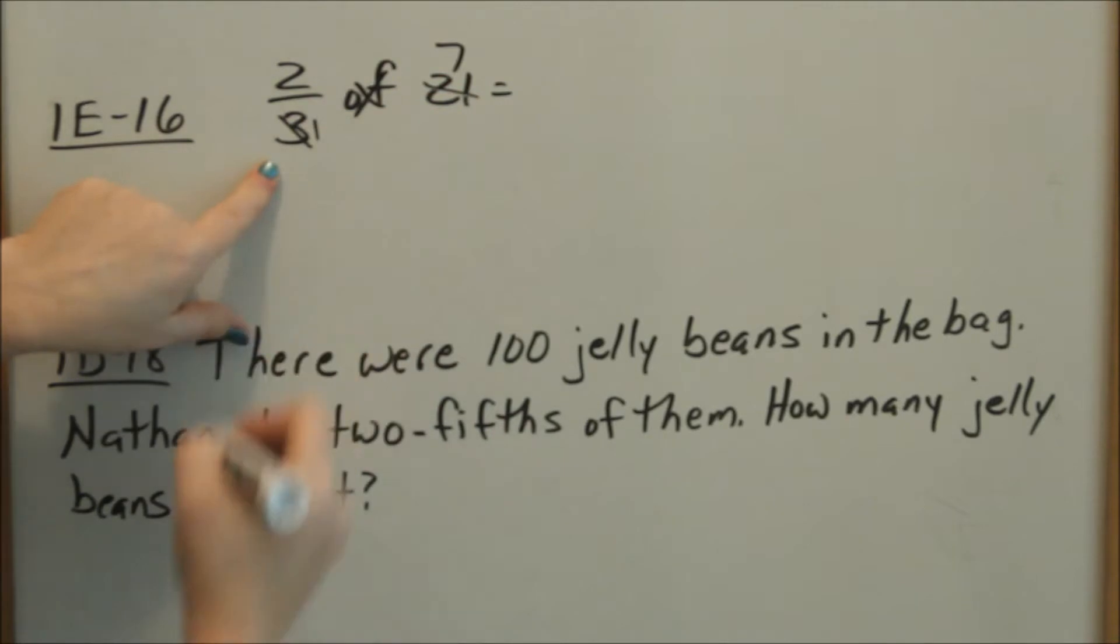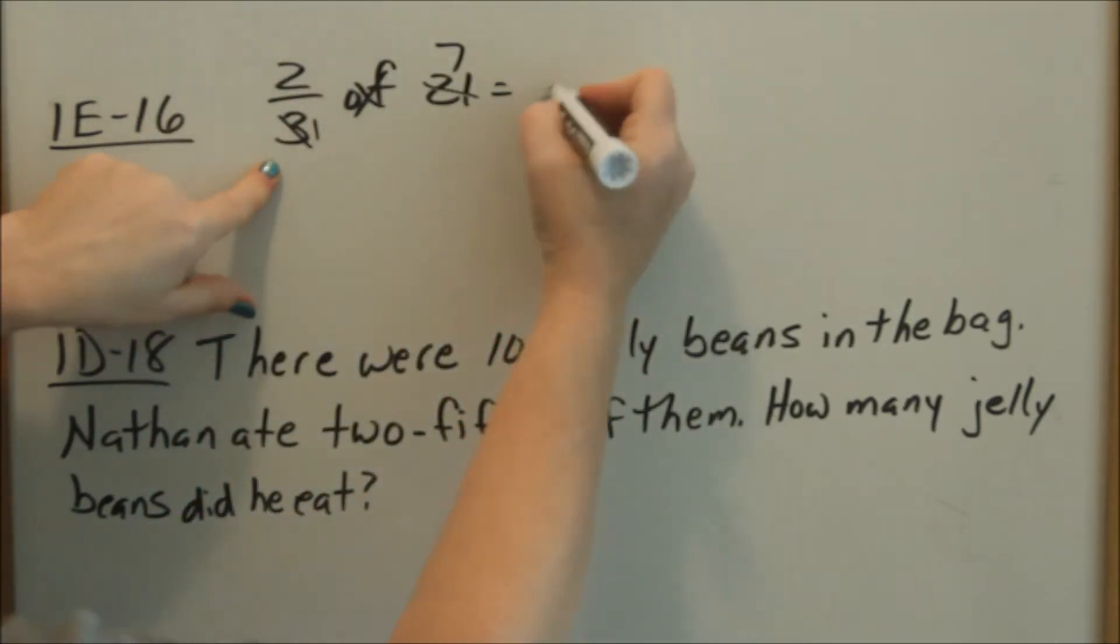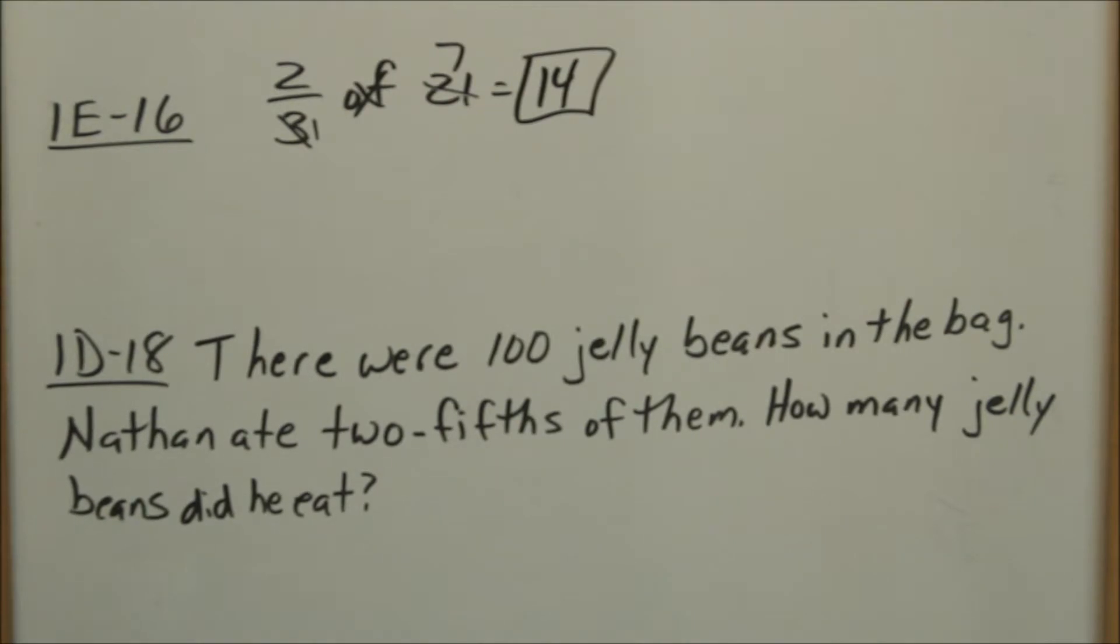Then you multiply. So then 2 times 7 equals 14. Just so happens both of those answers came out to 14.